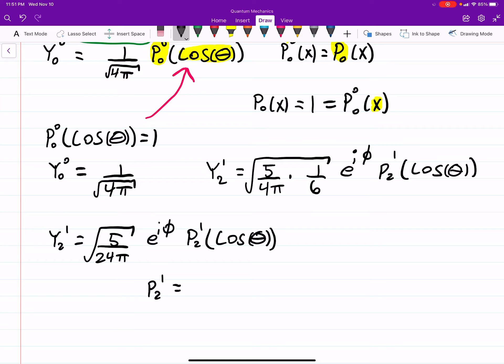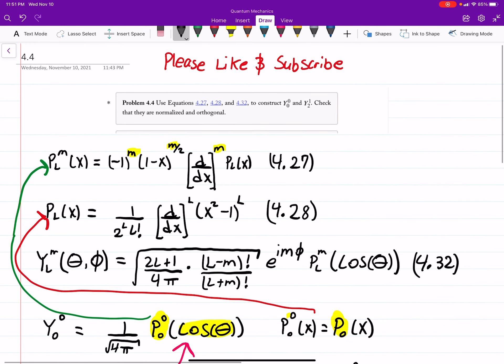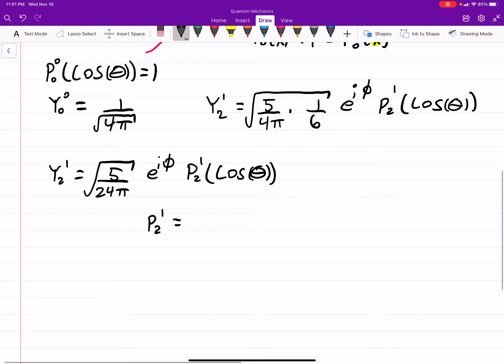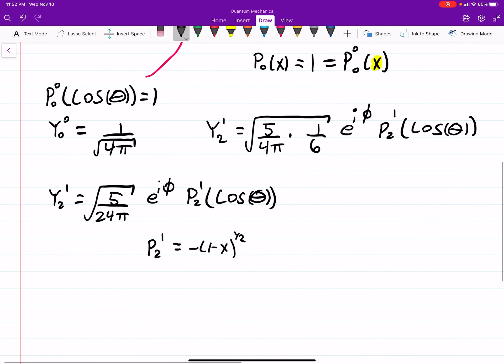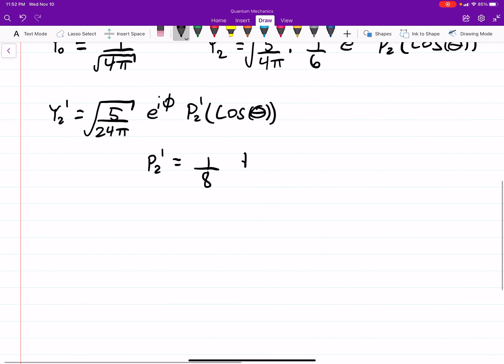And then we just follow the same procedure, plugging into our above equations. So P₂¹, just plugging into that green arrow there. Not over 2. And then we'll have d/dx, d/dx of (x² - 1)².